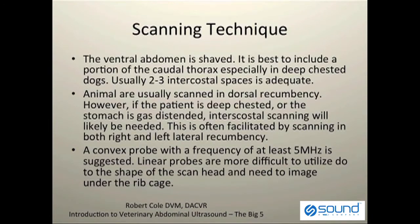With all of the big five organs, we're going to start with our patients in dorsal recumbency. We'll shave the ventral abdomen, which will usually include a portion of the caudal thorax, especially in our deep-chested patients, and that will usually require two to three intercostal spaces.